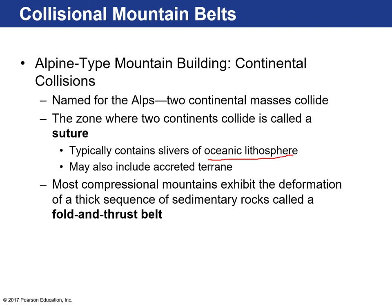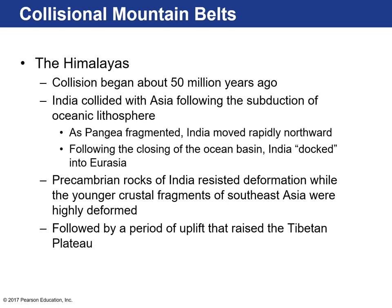Most of these compressional mountains exhibit crazy deformation — thick sequences of sedimentary rocks creating fold and thrust belts. The Himalayas are the perfect example of a really young mountain chain where this is currently occurring. Collision began approximately 50 million years ago when India collided with Asia. Before that, as India moved northward, it had a leading ocean lithosphere that was subducting and creating continental arc volcanism on the Eurasian plate. The history begins when Pangaea started to fragment about 200 million years ago — India moved northward rapidly along with Australia, on the same plate.